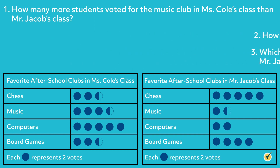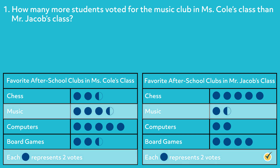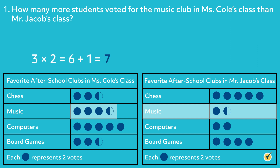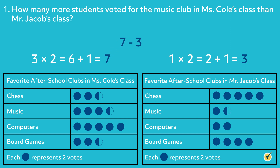Now that you've tried these problems, let's go over them together. How many more students voted for the music club in Ms. Cole's class than Mr. Jacobs' class? Start by finding the total number of votes for the music club in each class. According to the key, each symbol represents two votes. Each half symbol represents half of two, which is one. There are three whole symbols and one half symbol next to music in Ms. Cole's class. Multiply each whole symbol by two and add one for the half symbol. Three times two equals six, and six plus one equals seven. So there are seven votes for music club in Ms. Cole's class. Looking at Mr. Jacobs' class, we see one whole symbol and one half symbol. Multiply each whole symbol by two and add one for the half symbol. One times two equals two, and two plus one equals three. So there are three votes for the music club in Mr. Jacobs' class. To figure out how many more students voted for music club in Ms. Cole's class, subtract the votes in Mr. Jacobs' class from the votes in Ms. Cole's class. Seven minus three equals four, so four more students voted for the music club in Ms. Cole's class.